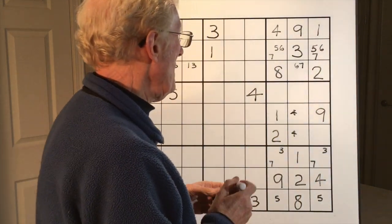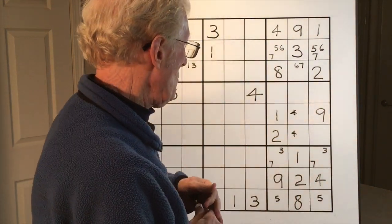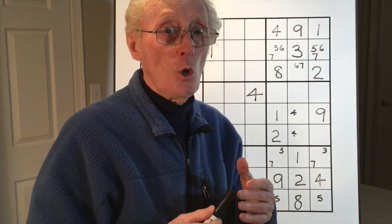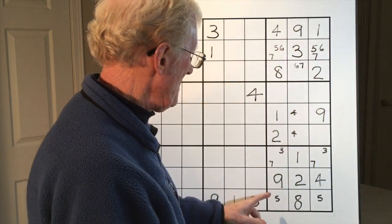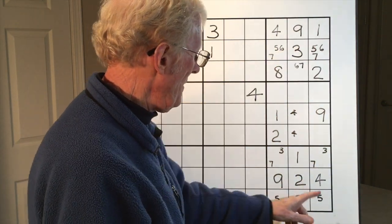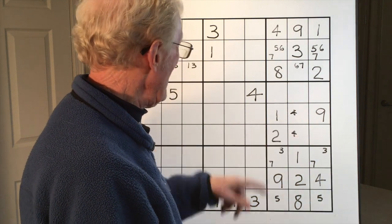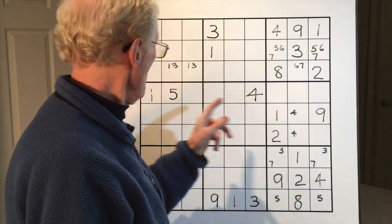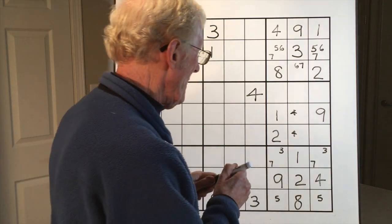Let's take the fact that we have what they call a diagonal cross with the 5s. Here's the 5 here, a 5 here, there's a 5 here and 5 here. The 5 must be in the middle here, and it cannot be here because of this 5 in here. So this has to be a 5-5.